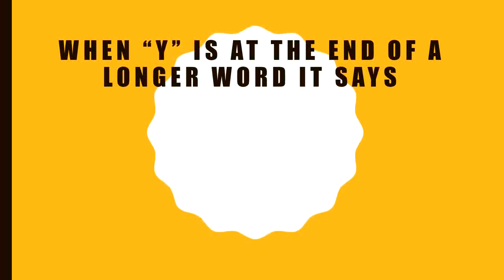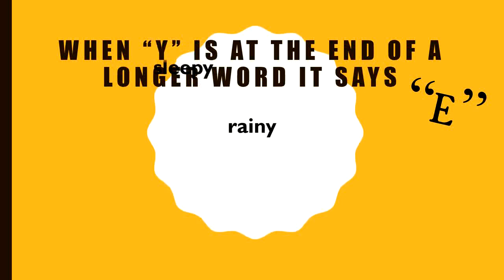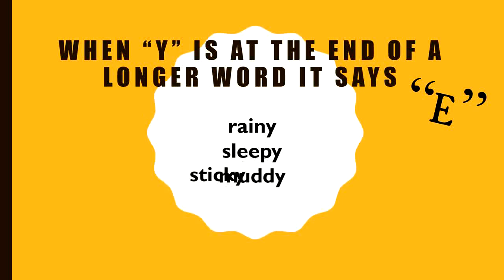So when Y is at the end of a longer word, it says ee. Let's review that list again. Rainy, sleepy, muddy, and sticky. Each of these words is a little bit longer and so the Y at the end says ee.